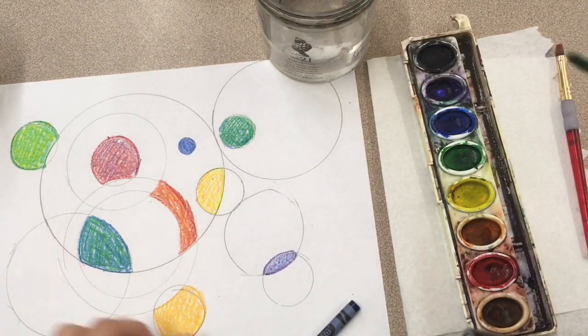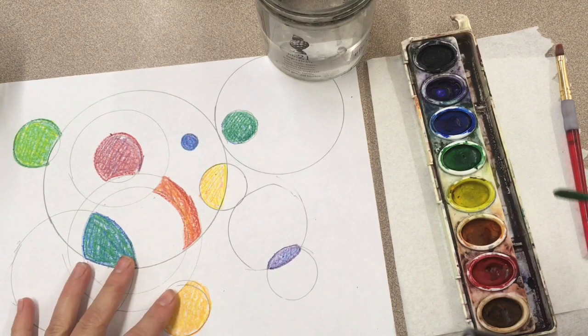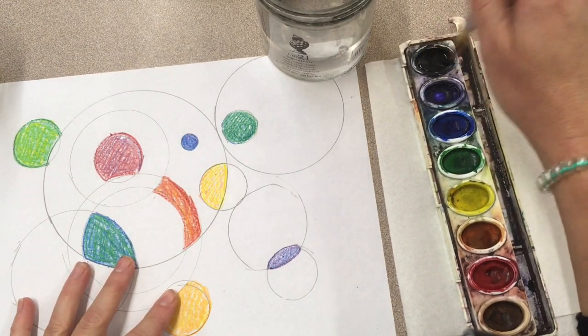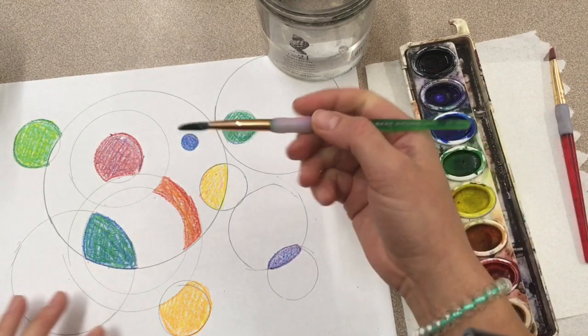When you mix paint and crayon together, it's going to create something called resist. Maybe I want to use some black paint to make some of my crayons stand out a little bit more.